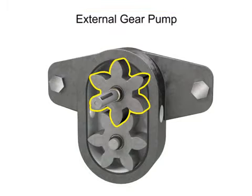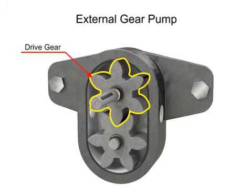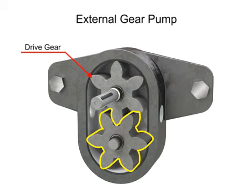One gear is driven by a motor connected to a shaft. This is called the drive gear because it is driven by a motor, and it in turn meshes with and drives the movement of the second gear.